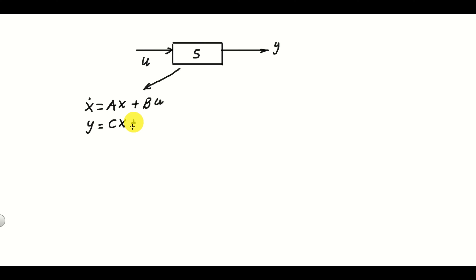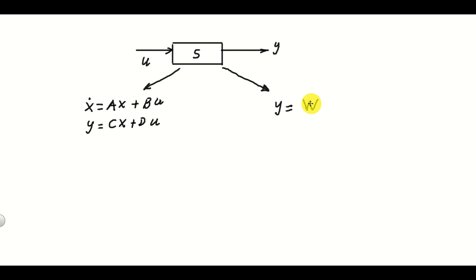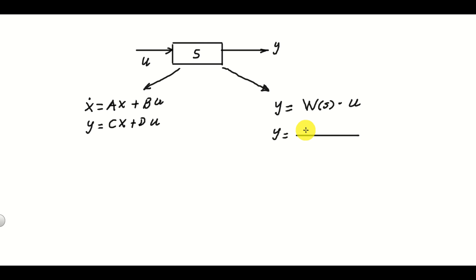A, B, C are the matrices, as well as the matrix D. U and Y are the inputs and outputs. X dot is the first derivative of X. Another very popular representation in the case of a single input and single output system is the so-called transfer function representation. The transfer function is some kind of complex function of a Laplace complex variable S, W of S, and the output is the transfer function multiplying the input. Usually transfer functions are represented as a ratio of two polynomials — one polynomial in the numerator and one in the denominator.